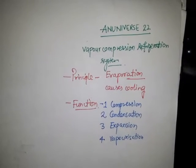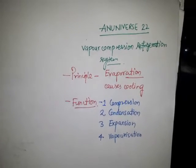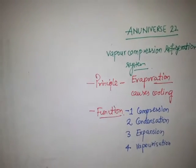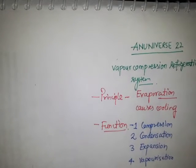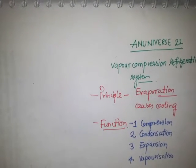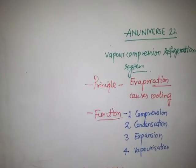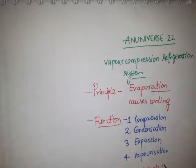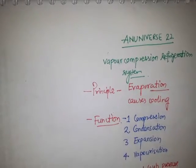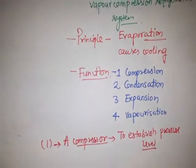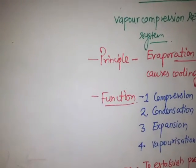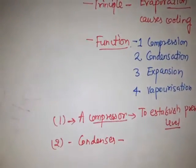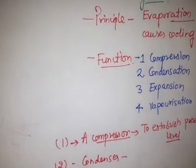Now we need to understand what is the necessity of the vapor compression refrigeration system. There are four main necessities. The first one is a compressor — a compressor is required to establish pressure, basically to maintain the pressure difference. The second necessity is a condenser.